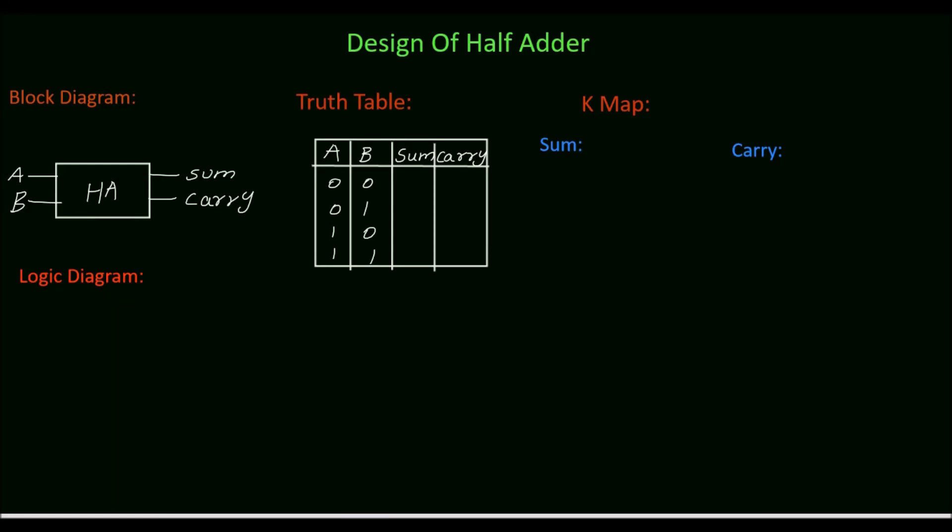In this tutorial we will see how to design half adder. First we will draw the block diagram for half adder. Half adder is a combinational circuit which adds 2 bits of binary number and produces 2 binary outputs: sum and carry.